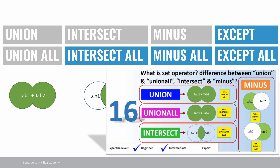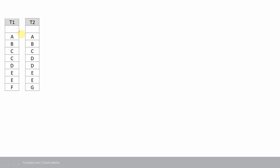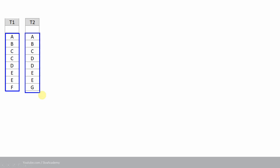Now let us go into detail about these four new set operators with an example. I am taking two tables, T1 and T2. T1 is populated with data: A, B, C, C, D, E, E, and F. Similarly, T2 is populated with: A, B, C, D, D, E, E, and G.